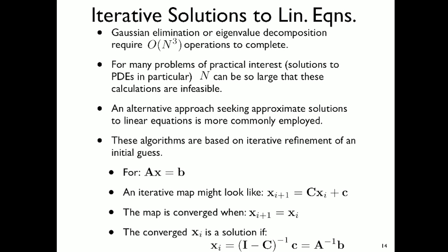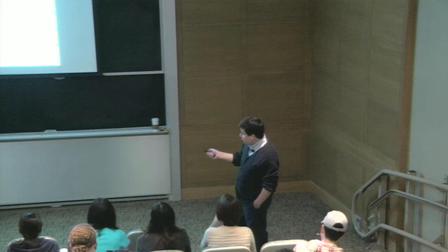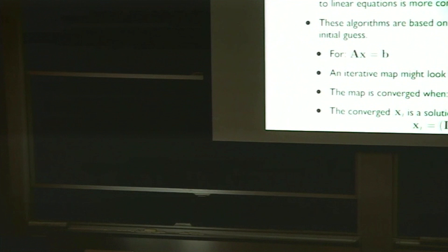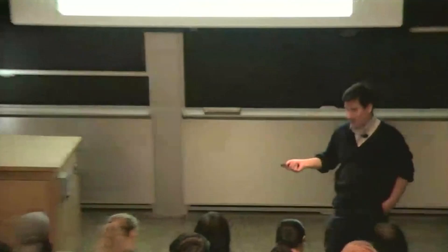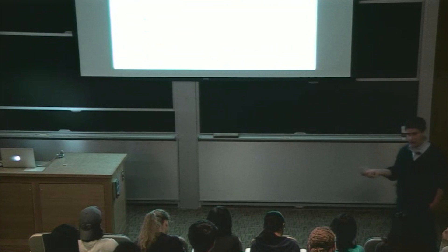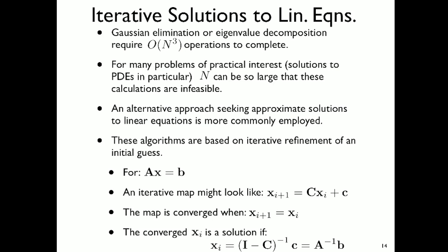These algorithms are based on iterative refinement of an initial guess. For a system AX = B, we formulate a linear map: Xᵢ₊₁ = C·Xᵢ + c, where Xᵢ is the current best guess. We hope that as we apply this map repeatedly, we creep closer to the exact solution. The map converges when Xᵢ₊₁ approaches Xᵢ. The converged value is a solution when it equals A⁻¹B. We need to choose C and c so the map converges to the desired solution.